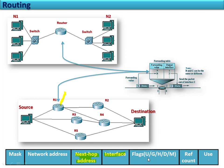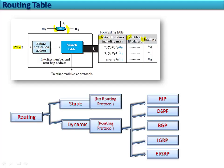In the flags field there are five different flags: U means up, G means gateway, H means host-specific, and D and M flags represent addition and modification of information. The reference count field gives the number of users accessing the route at the moment, and the use field gives the number of packets transmitted through the router to a particular destination. When a packet reaches the router, the router looks at all the entries — when the destination network address is matched, the corresponding interface is used to forward the packet.